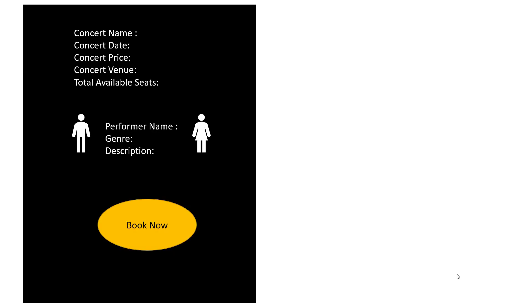If you open any concert, it shows the concert name, concert date, price, venue, and total available seats. Only one user can enter the concert at a time, reserving a single seat. It also shows the performer name, genre, and description. If you are an organizer and want to book tickets online, just click 'Book Now' and you'll get a Stripe payment method to complete the payment and receive your tickets.